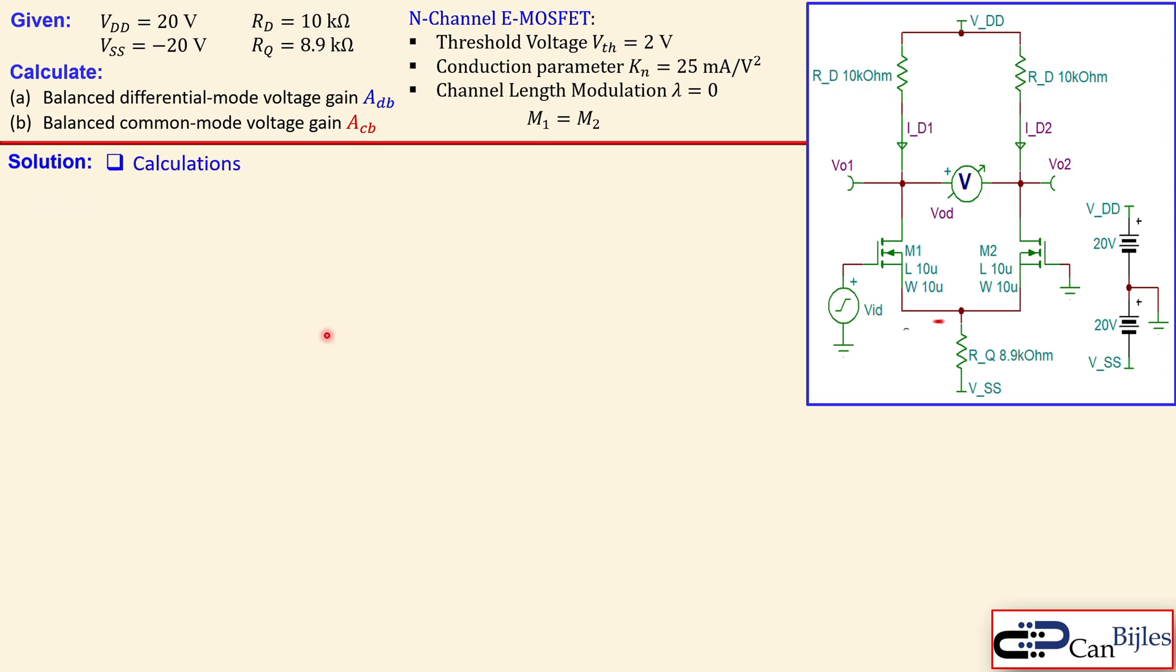Our first step is calculations. Let's check what we have as currents. This is the current IS1, the source current for M1, this is the source current for M2, and there's also a tail current IQ flowing through RQ. Since the gate currents are zero because the gate is a sort of capacitor for the MOSFET, then ID1 is equal to IS1 and ID2 will be equal to IS2.